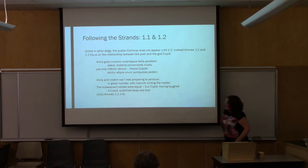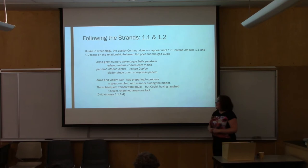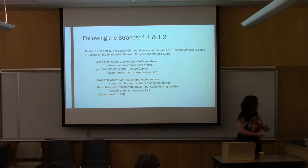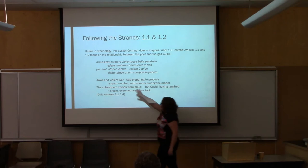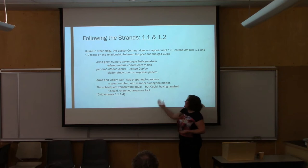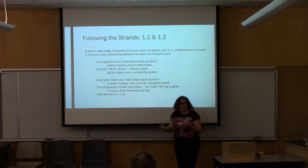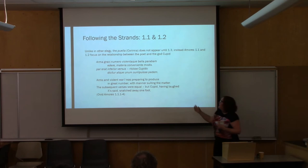Starting with poem 1.1 — the opening two couplets: 'Arms and violent war I was preparing to produce in great number, with manner suiting the matter. The subsequent verses were equal, but Cupid, having laughed, snatched away one foot.' The poet wanted to write epic about arms and war, writing in hexameter, but Cupid came along and snatched away one foot, turning hexameter into pentameter and thus forcing him to write elegy. But what's really interesting is that right from the start, the relationship developed is not between the poet and a Puella, but between the poet and the divine — between the poet and Cupid.